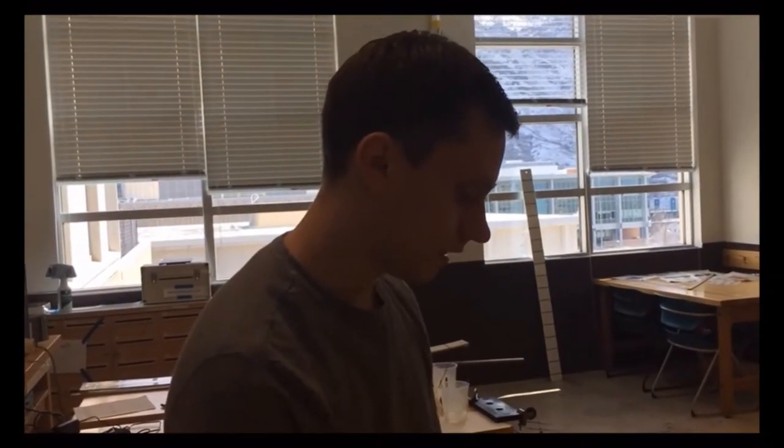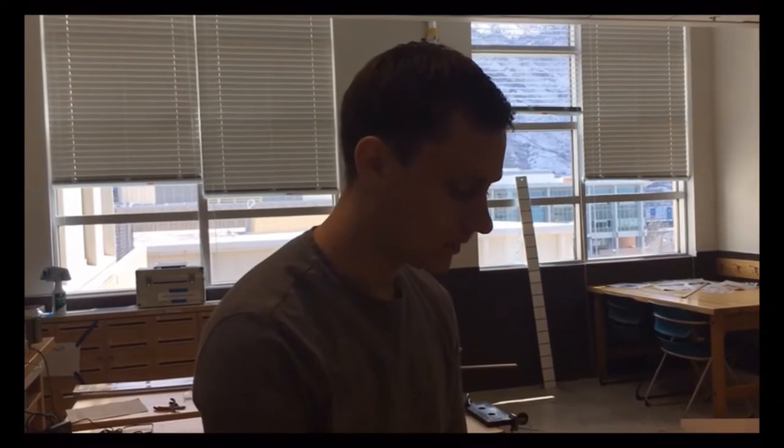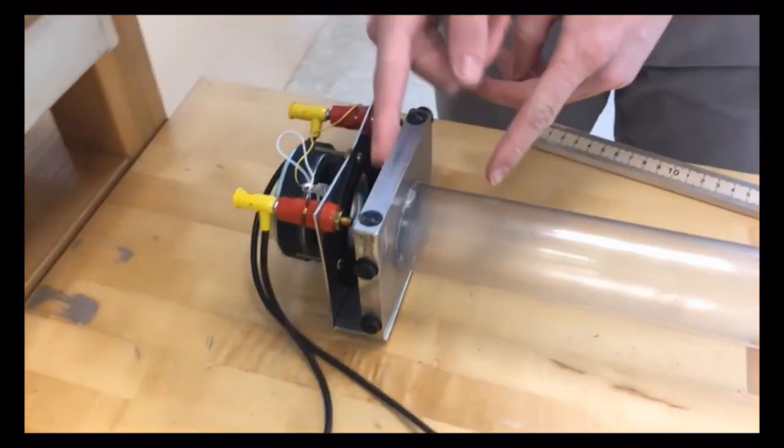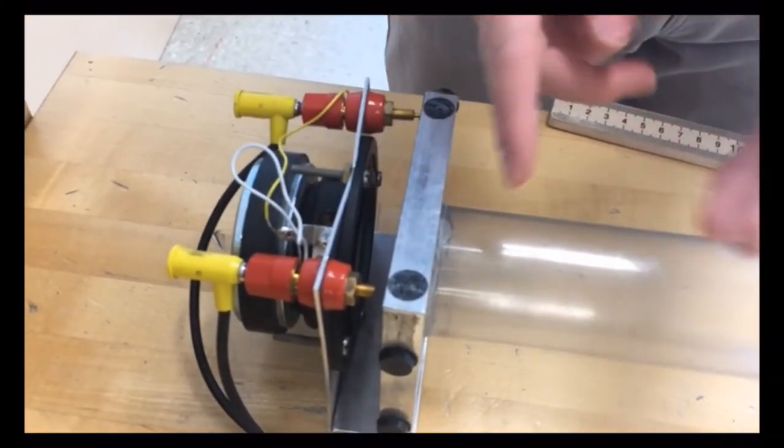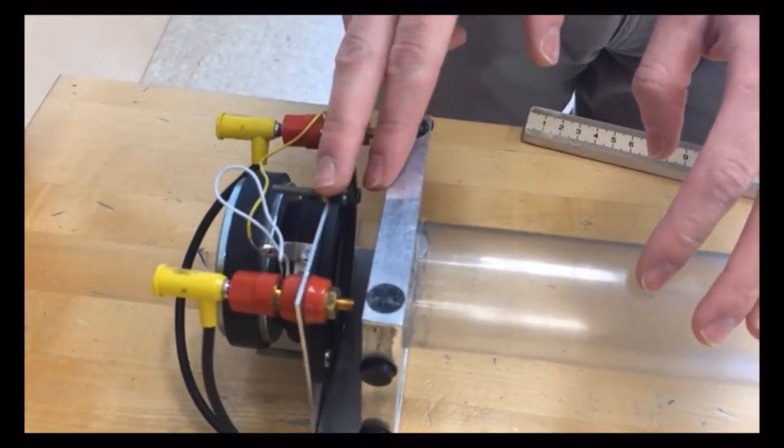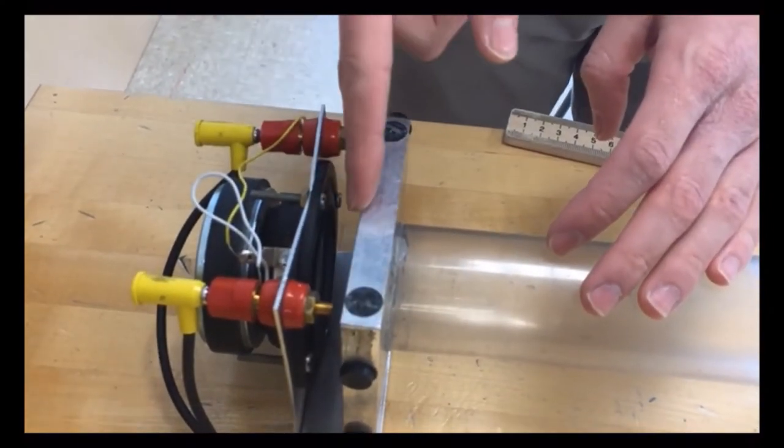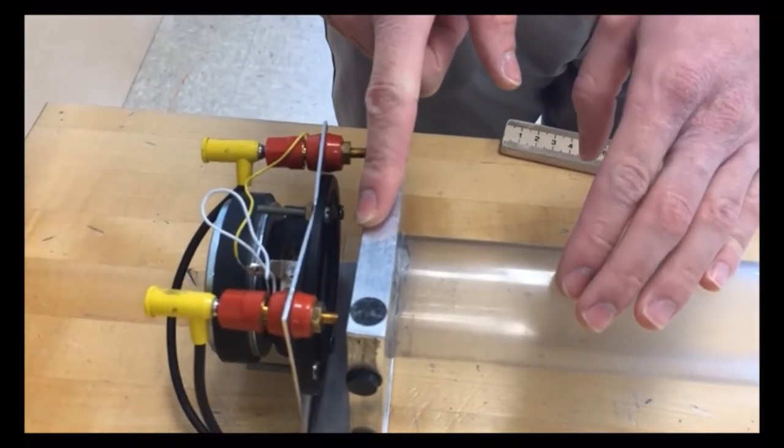And then from there, you can just do some numeric approximation to try to compensate for this delta L here. Because in all actuality, if we look down here, this speaker is not right up against the tube. So there's some length here that the standing waves are extending out. Now, it's not all the way to the speaker because it's no longer enclosed, but they are not exactly on the end here.